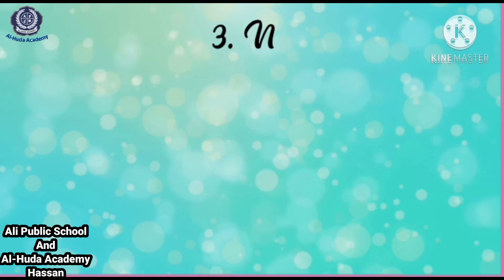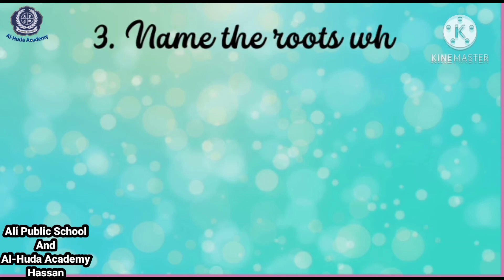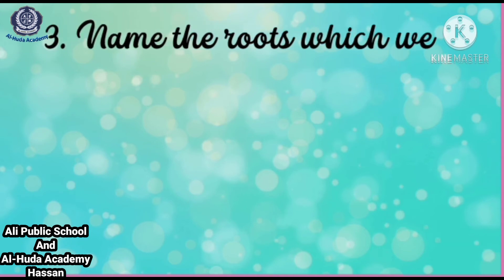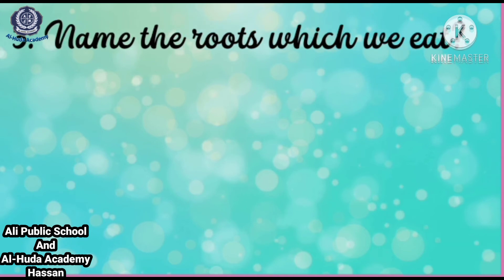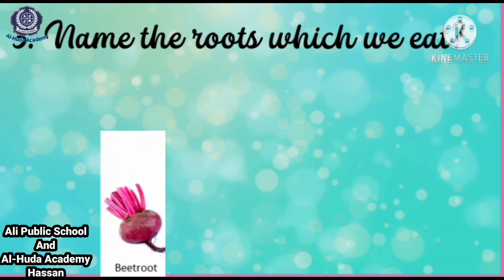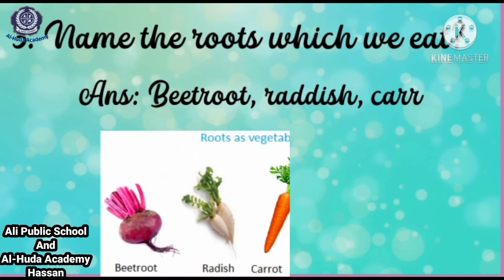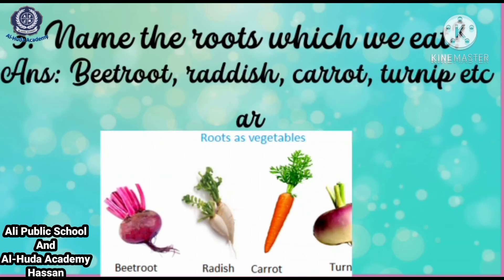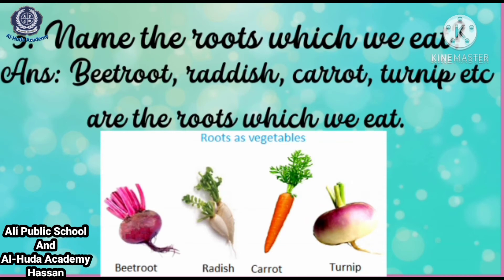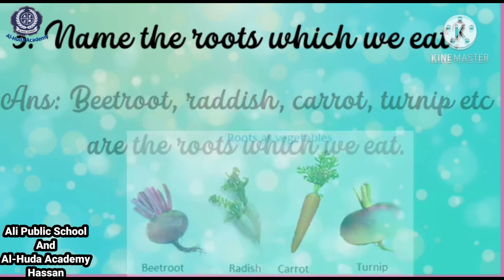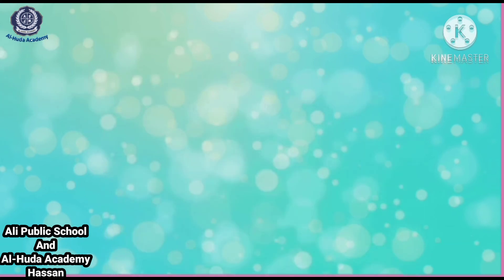Number 2, what is the color of the root? Answer: the color of the root is brown. Number 3, name the roots which we eat. Answer: beetroot, radish, carrot, turnip, etc. are the roots which we eat.